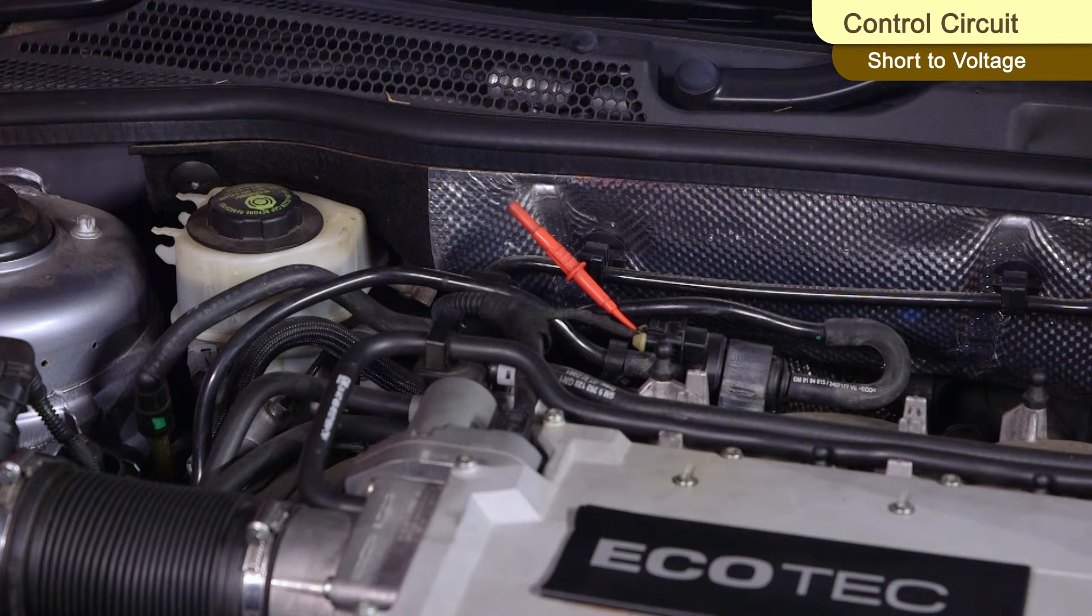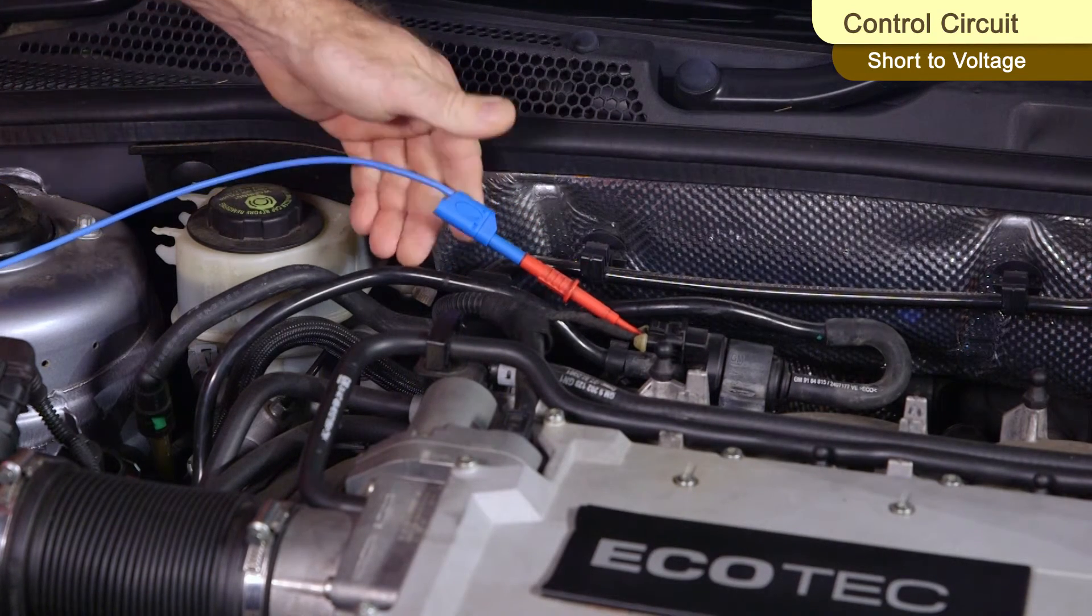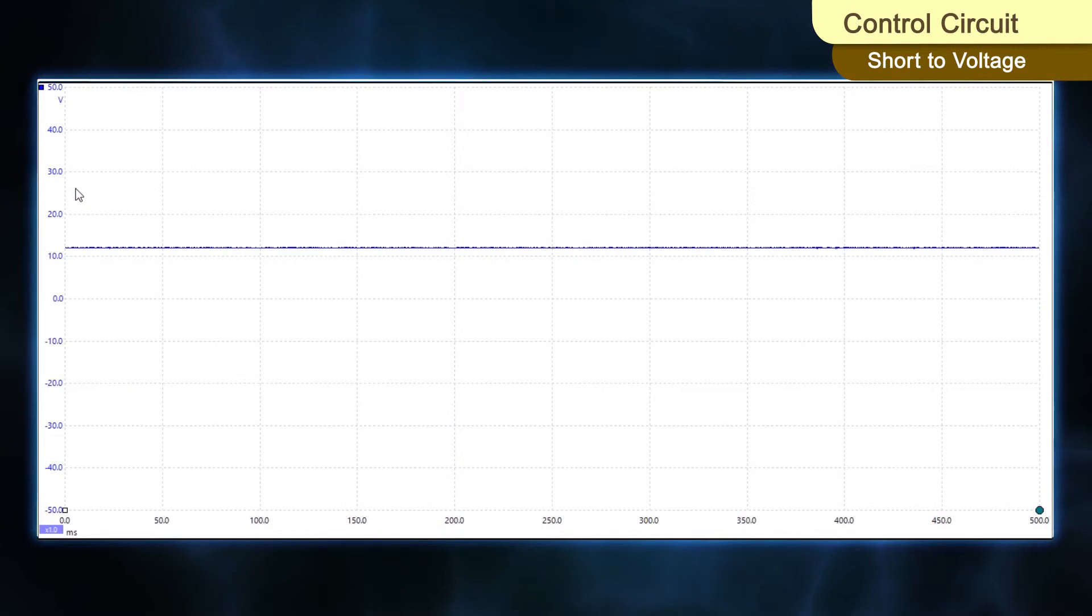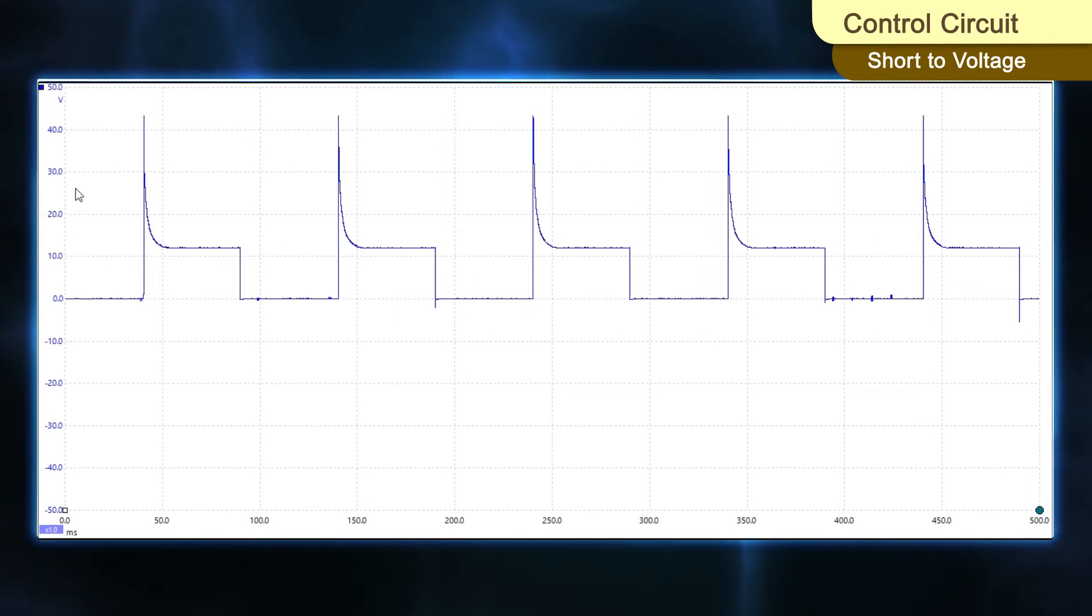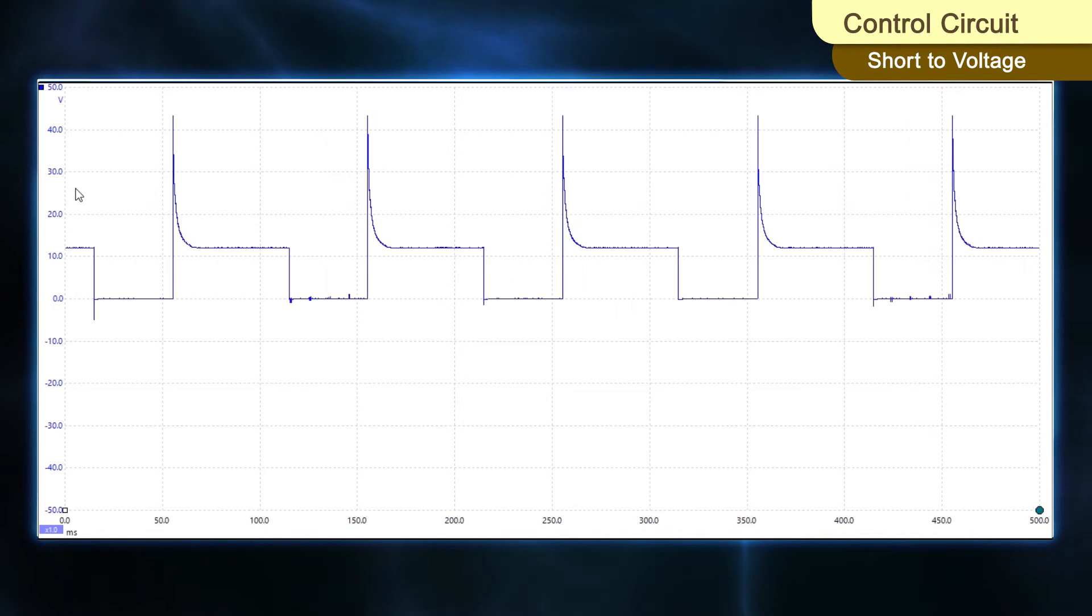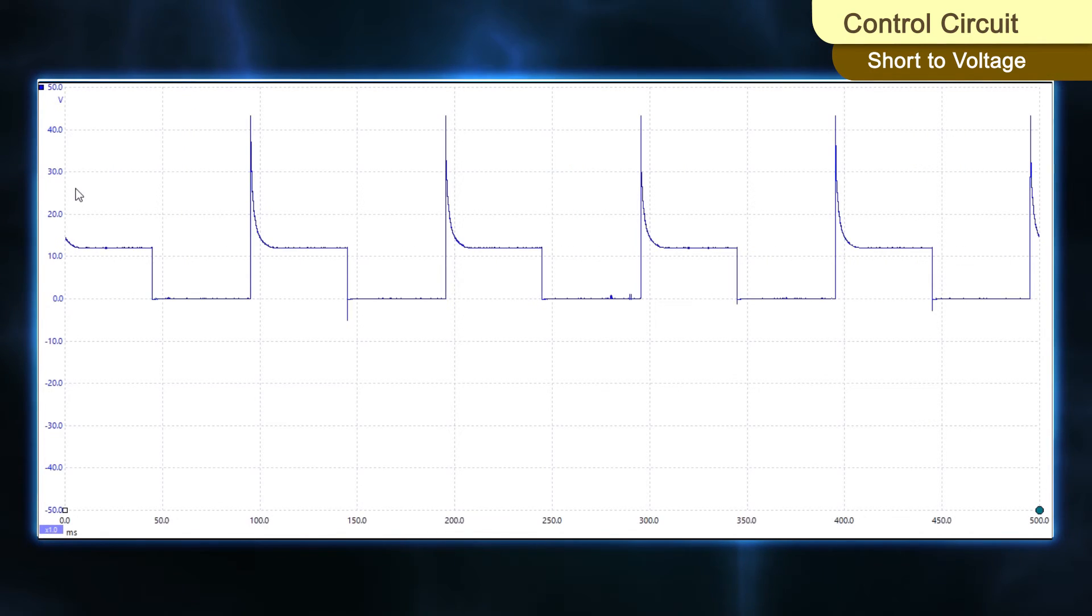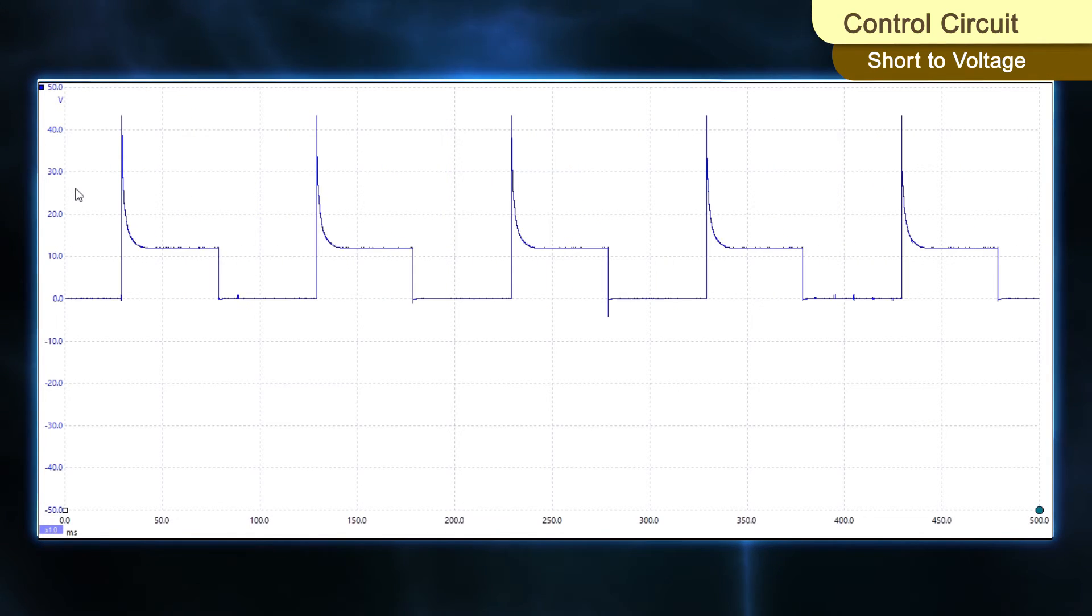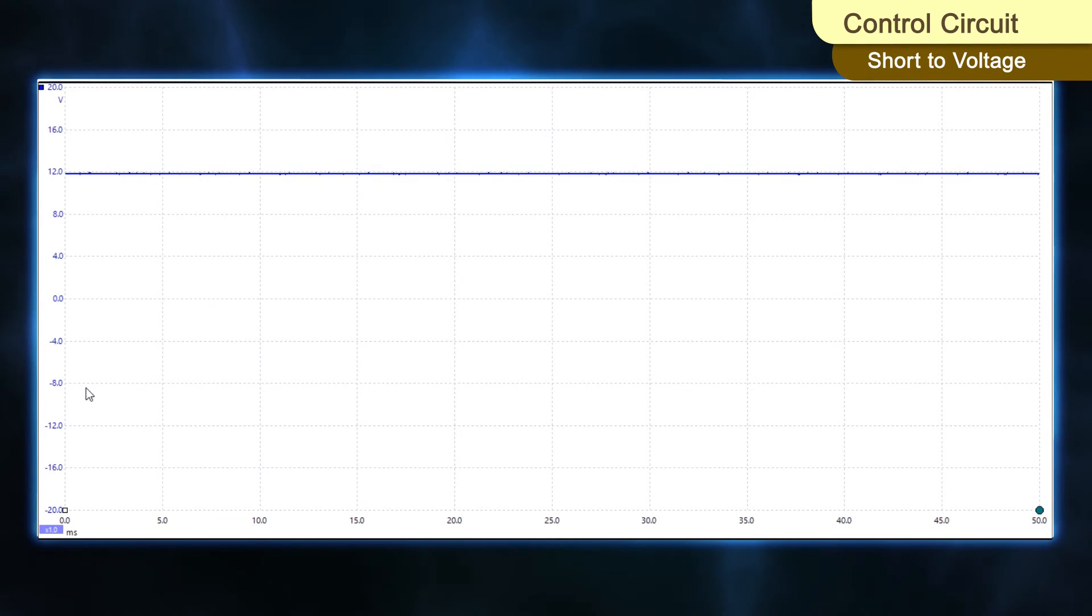At the EVAP purge solenoid connector, back probe the control circuit with one channel of the scope. Using a scan tool, actuate the EVAP solenoid at 50% duty cycle. A square wave duty cycle pattern should be evident. The pattern should pull down to zero volts and then return to 12 volts. If the pattern remains at a constant voltage or does not pull down to zero, then there may be a short to voltage in the control circuit.